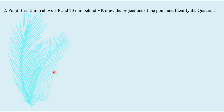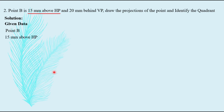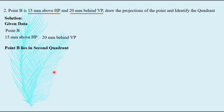Second question: point B is 15 mm above HP and 20 mm behind VP. Draw the projections of the point and identify the quadrant. Given data: point B is 15 mm above HP and 20 mm behind VP. Above HP and behind VP corresponds to the second quadrant, so point B is in the second quadrant.